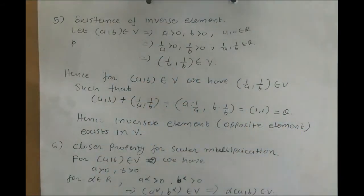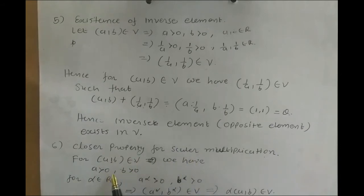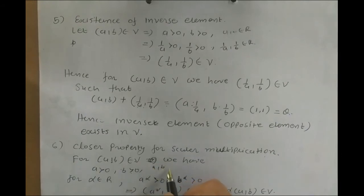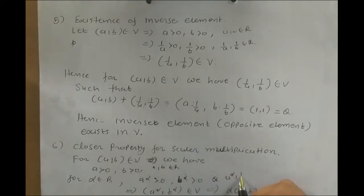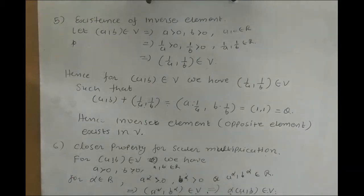These five properties are for vector addition. Now the remaining five are for scalar multiplication. Sixth, closure for scalar multiplication: if (A,B) belongs to V, then A > 0 and B > 0. For alpha in R, A^alpha > 0 and B^alpha > 0, and A^alpha, B^alpha belong to R. So alpha·(A,B) = (A^alpha, B^alpha) belongs to V. Closure for scalar multiplication is satisfied.